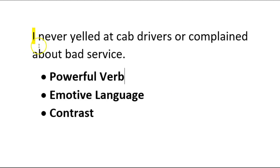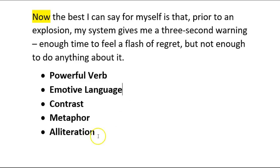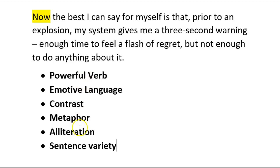'I never yelled at cab drivers or complained about bad service.' So we've got powerful verbs — 'yelled', maybe not so much 'complained' but definitely 'yelled'. Emotive language — obviously 'yelled' is, 'bad' is, 'complained' is. And then contrast against what I used to be like compared to what I'm like now. Again, three techniques in the one sentence. We've had a few of those short sentences, so bang — she hits us with another really long complex one. Again, that sentence variety.